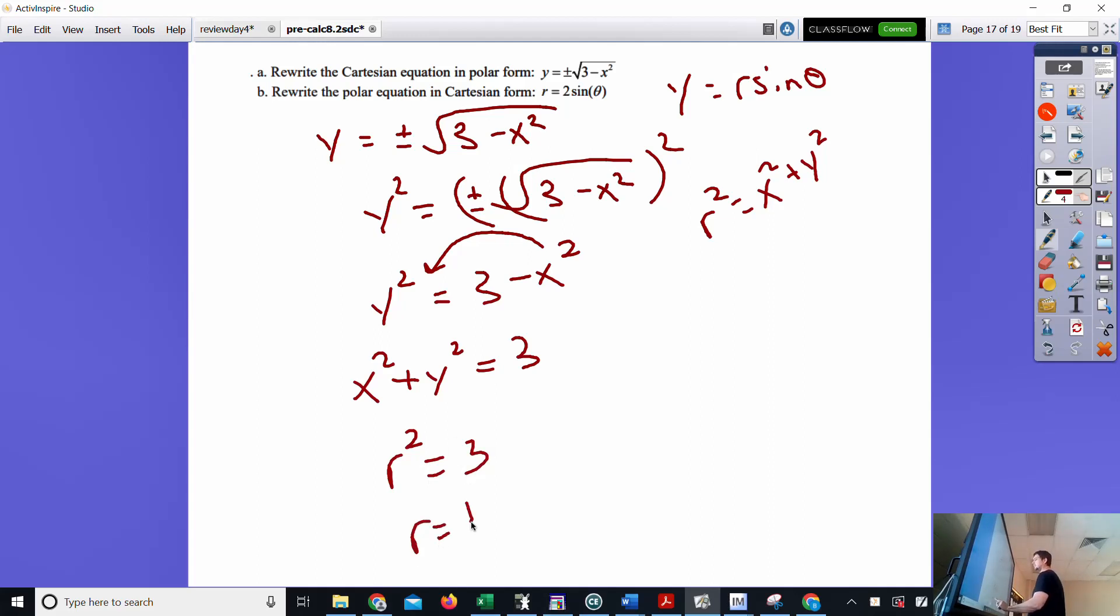The polar equation is plus or minus root 3. That is a circle with a radius equal to root 3. That's all she is. And I don't even need the plus or minus. It's just positive root 3.